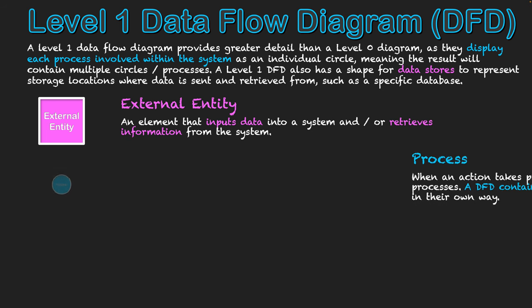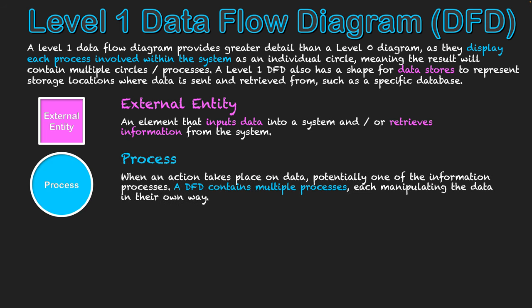Next, we have the process. At the level zero level we only ever had one, but now at level one we have multiple process symbols. We use them to show each sub-process of the system — how they are actually manipulating the data in different ways in order to turn that data into information as per the purpose of the system.